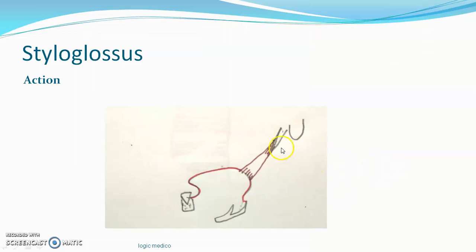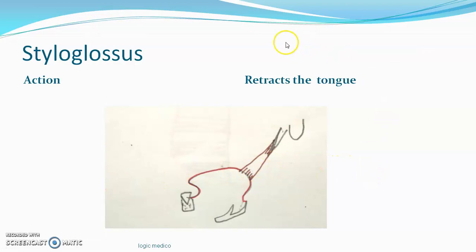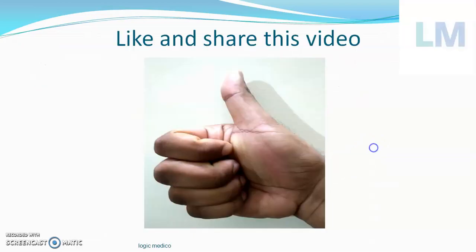The action of styloglossus: when it contracts, the tongue goes backwards and upwards — that is retraction of the tongue. This backward and upward movement of the tongue thereby helps in deglutition, or swallowing.